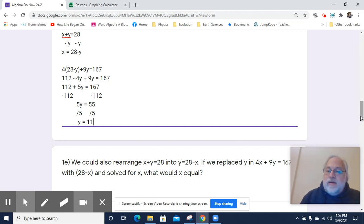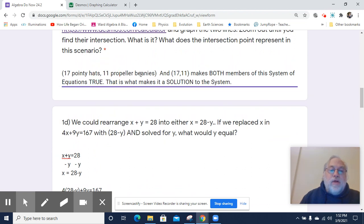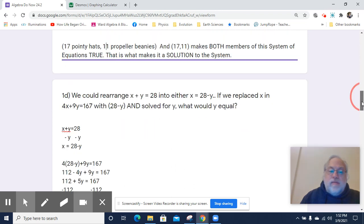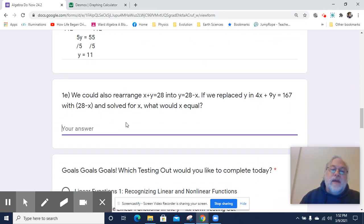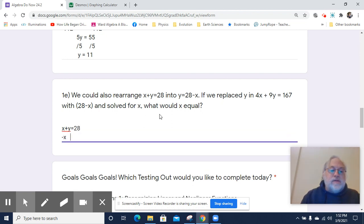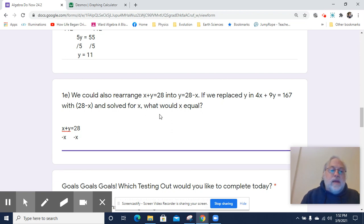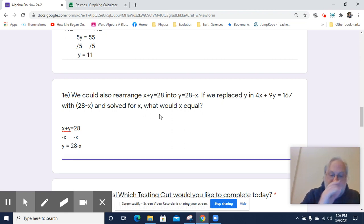So now, earlier on, we said there were 11 propeller beanies, that Y was 11. So that matches up. But you want to bet it's going to match up for the other one. So once again, we rearrange things. This time, I subtract X from both sides. So I've got X plus Y equals 28. I subtract X from both sides. And I get Y equals 28 minus X. And now I'm just going to take that equation again for 4X plus 9Y equals 28, and I'll replace Y with 28 minus X. And I have just one variable to work with. So that'll make my life a lot easier.